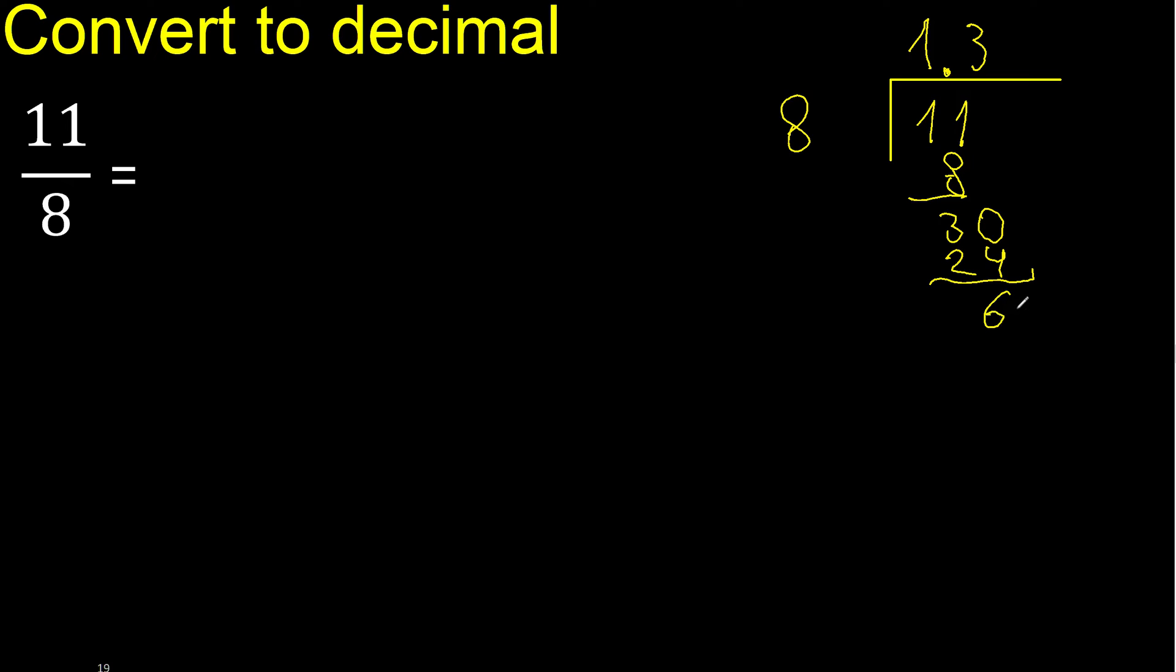30 subtract 24 is 6. Complete—there is no number that goes down. Complete with 0, always with 0. Point only once. 60.